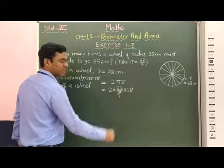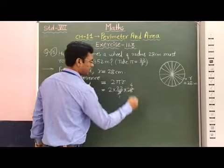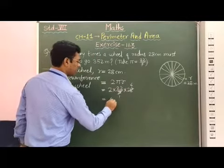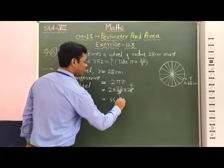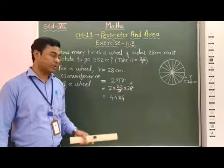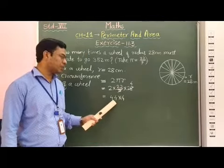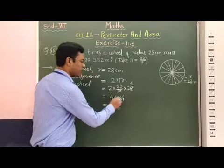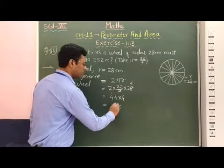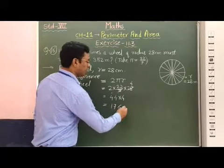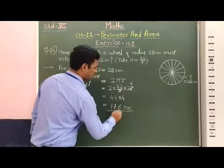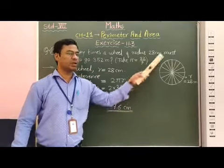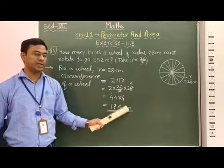Now, 7 into 1 is 7, and 7 into 4 is 28. Therefore, 2 into 22, giving 24, and 24 into 4. The multiplication of 24 and 4: 4 fours are 16, carry 1; 4 fours are 16 plus 1 is 17. Therefore, students, the circumference of this circular wheel is equal to 176 cm.